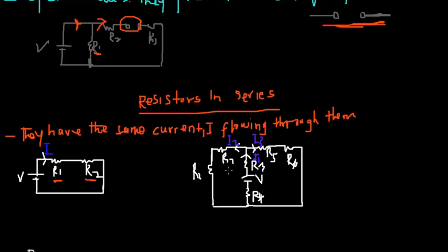We can state that R1 and R2 are in series because the same current I is flowing through both R1 and R2. There is no breakage where the current splits, so the same current flows through R1 and R2.